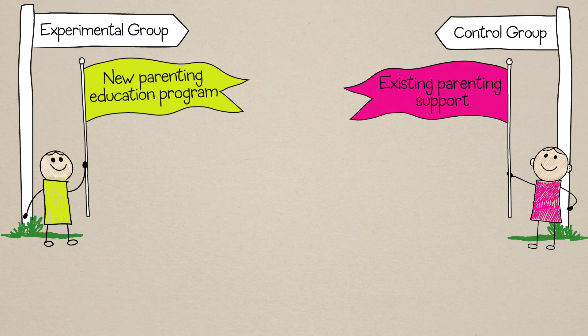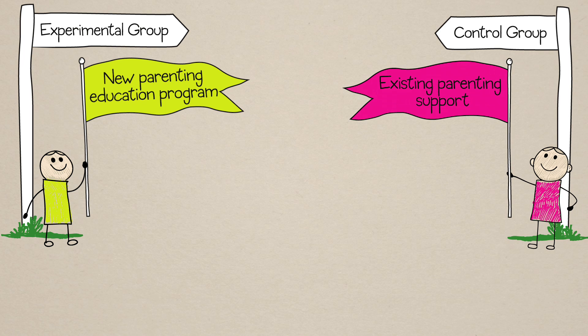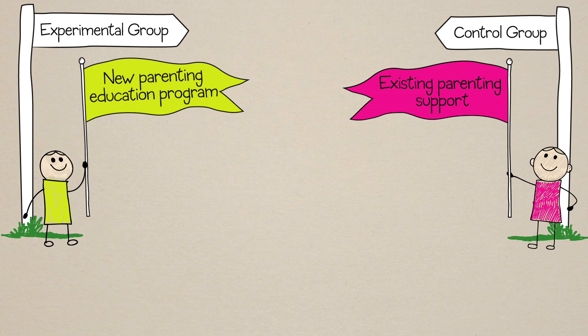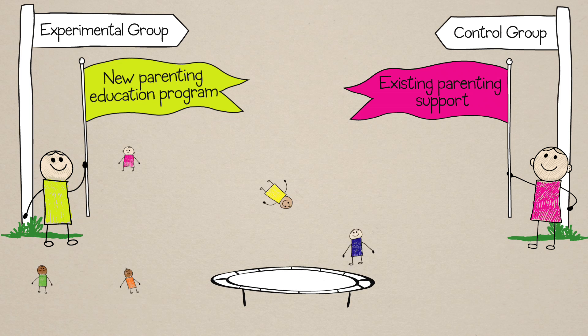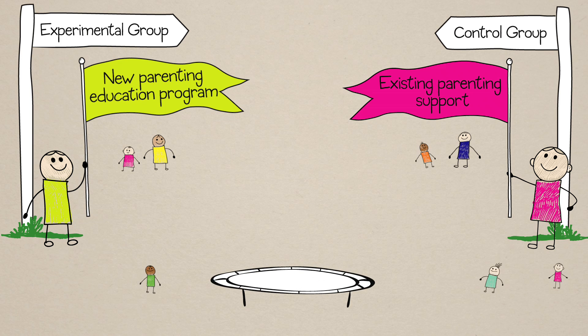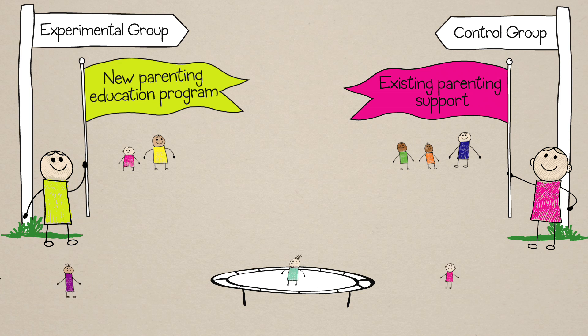In this case, whatever parenting education resources were available to parents in the target population before the new intervention became available. Random assignment means that each eligible unit has an equal chance of being assigned either to the new program or to the usual program.